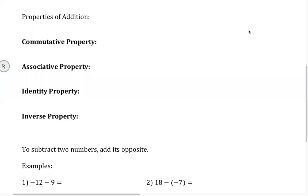Alright, I'm recording. So we left off at commutative property yesterday, associative property, identity property, and inverse property.